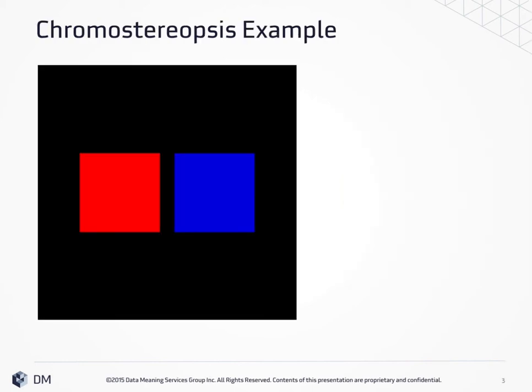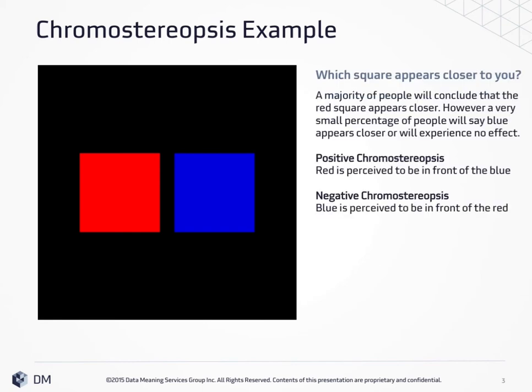Here's one example I created. Which square appears closer to you? A majority of people will conclude that the red square appears closer, and this is known as positive Chromostereopsis.